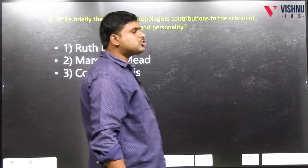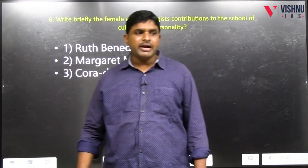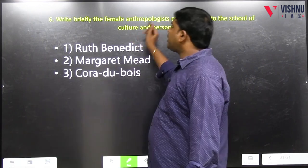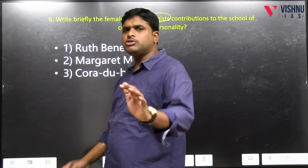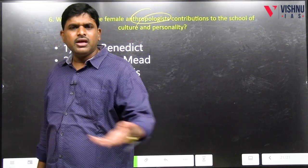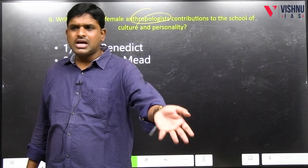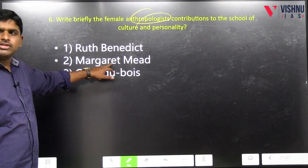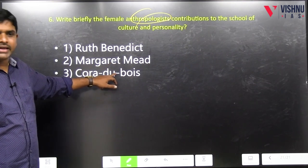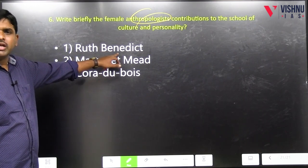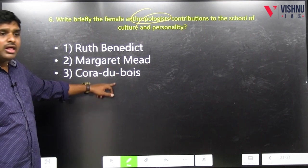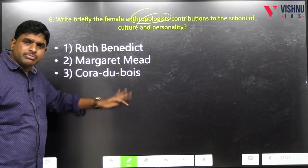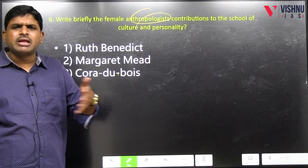Both female anthropologists contributed to the culture personality school. Write briefly: female anthropologist contributions. First write about culture personality school as discussed. Then write about Ruth Benedict — personality called 'special genius.' For Margaret Mead, it is called 'basic personality.' For Cora Du Bois, it is called 'modal personality.' Ruth Benedict studied Pueblo, Kwakiutl, Dobu. Margaret Mead studied Arapesh, Mundugumor, Chambri. Cora Du Bois studied Alori — her modal personality is from the fieldwork of Alori's children. Some students wrote examples of Brahmin, Muslim, Namaz — that is also correct, but the fieldwork examples are very important.